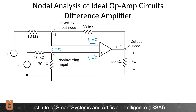Now we need to conduct the nodal analysis of an ideal op-amp circuit — starting with this difference amplifier. I always start from the part not connected to the feedback. Since no current flows into the non-inverting terminal, I can find the voltage using the voltage divider rule. It will be (3/4) VB, because I have 10 kΩ and 30 kΩ in series. And since V1 equals V2, the node potential here is also (3/4) VB.